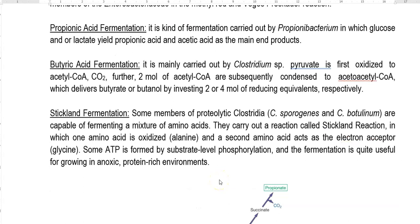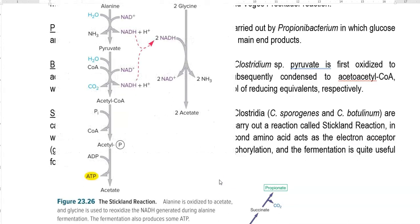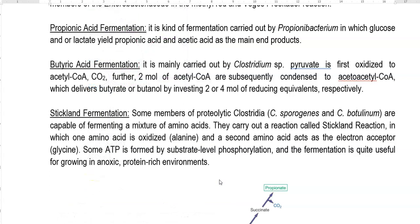The last one is Stickland fermentation, carried out mainly by members of proteolytic Clostridia, including Clostridium sporogenes and Clostridium botulinum. They are capable of fermenting mixtures of amino acids. They carry out the Stickland reaction, a form of reaction in which one amino acid is oxidized and another is reduced. Alanine serves as the electron donor and glycine serves as the electron acceptor during this fermentation process. Some ATP is formed by substrate level phosphorylation, making this kind of reaction helpful for bacteria, specifically Clostridia, growing in anoxic protein-rich environments.